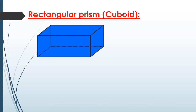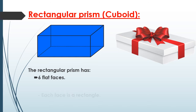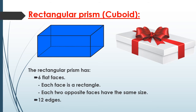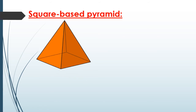The rectangular prism, or cuboid, is like a gift box in real life. The rectangular prism has six flat faces; each face is a rectangle, and each two opposite faces have the same size. It has 12 edges and 8 vertices.